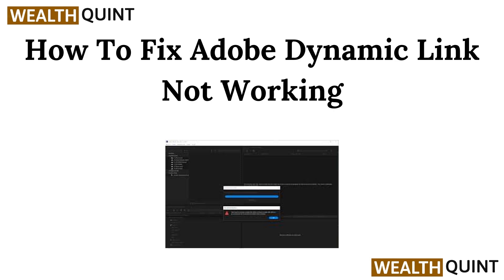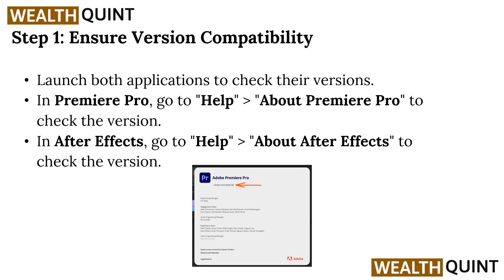Hey everyone, welcome back to our channel. In this video, we are going to talk about how to fix Adobe Dynamic Link not working. Step 1: ensure version compatibility — launch both applications to check their version. In Premiere Pro, go to Help, then click on About Premiere Pro to check the version.